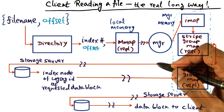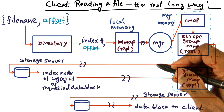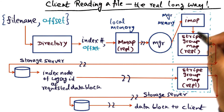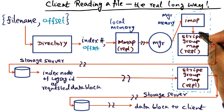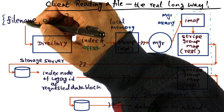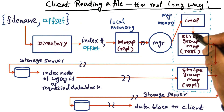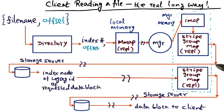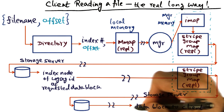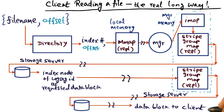But in the worst case scenario, if this particular log segment has never been accessed before, then the long way to get to the data block goes through the data structures in the manager, a network hop, storage lookup, and then the data is retrieved and given to the client.